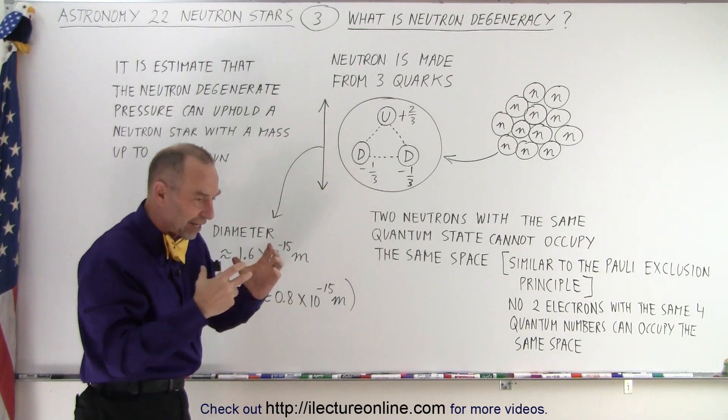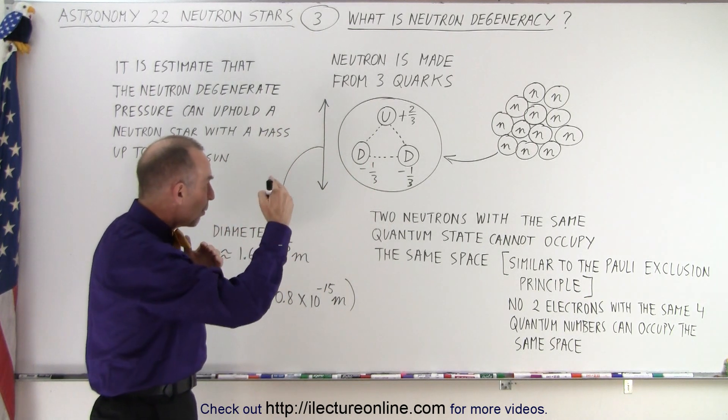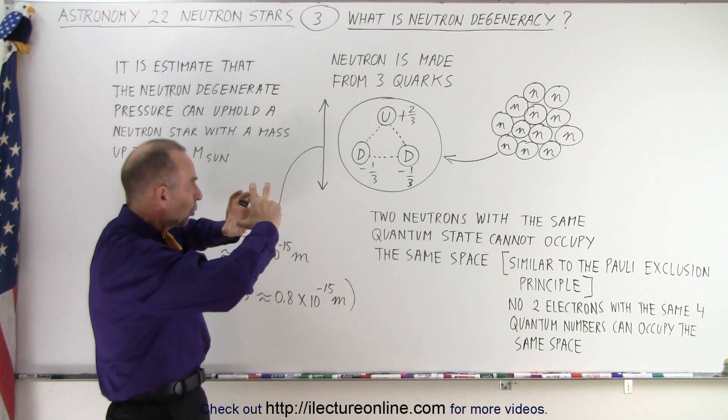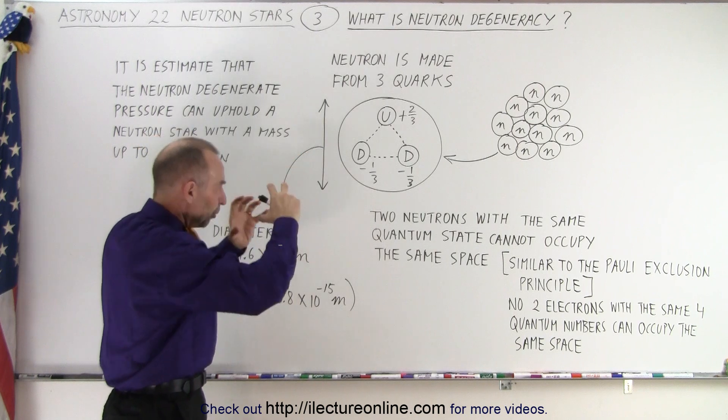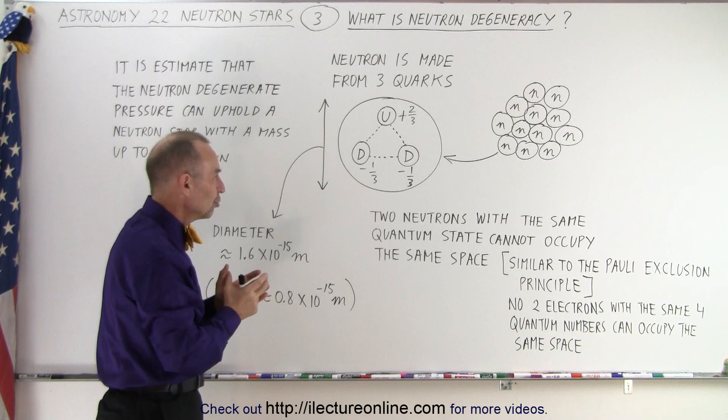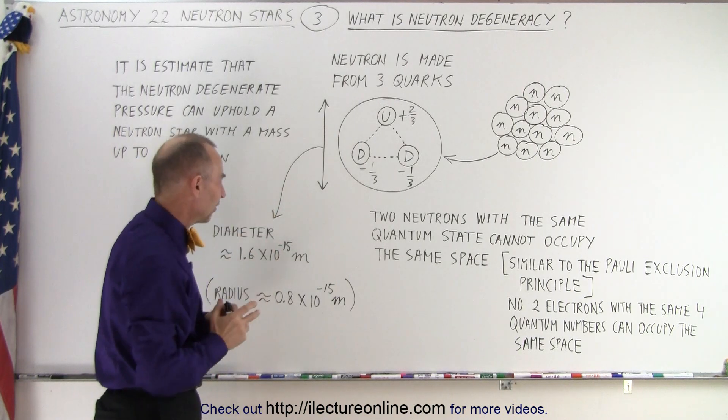The quarks have kind of a dual force within them in that they repel each other, but they also attract each other. If you try to pull the quarks further apart, they will pull back. If you try to push them closer together, they will push back. They form a particle like a neutron of that specific size.